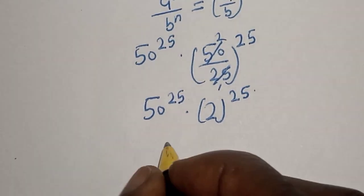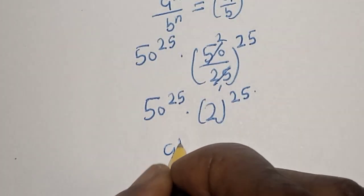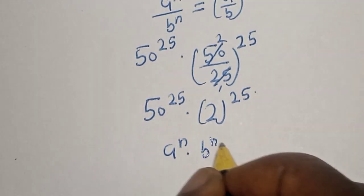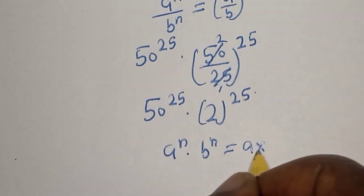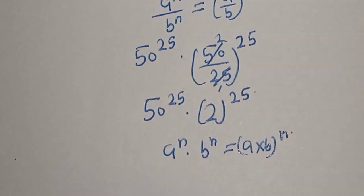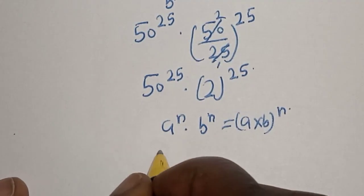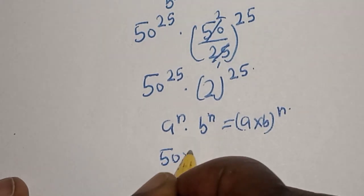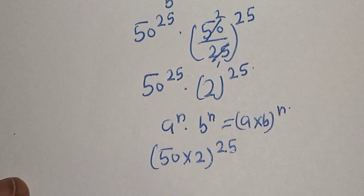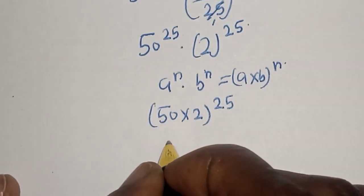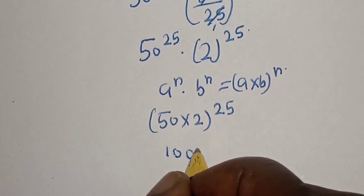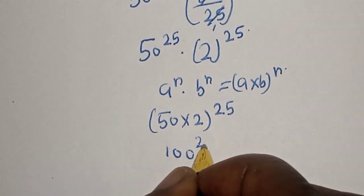Also take note of this rule: if you have a raised to power n multiplied by b raised to power n, this equals a times b raised to power n. So this becomes 50 times 2, raised to power 25. And 50 times 2 is 100, raised to power 25.